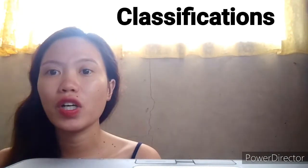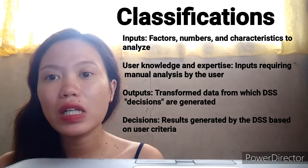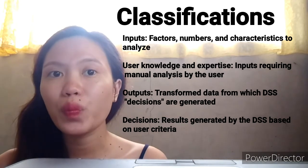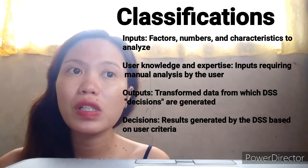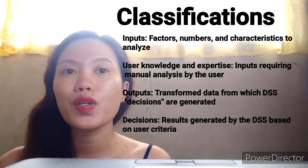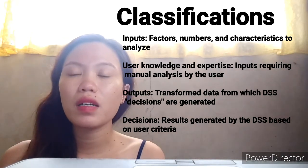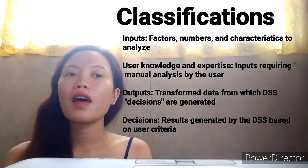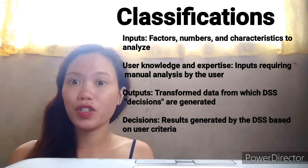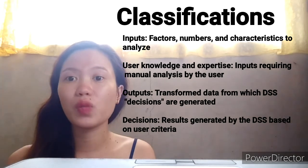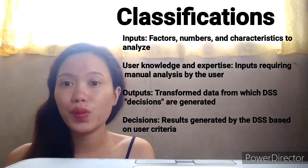The classification of DSS includes: inputs — user knowledge and expertise; outputs — decisions, factors, numbers, and characteristics to analyze; user knowledge and expertise inputs requiring manual analysis by the user; transformed data from which DSS decisions are generated; and finally, decisions — results generated by the DSS based on user criteria.